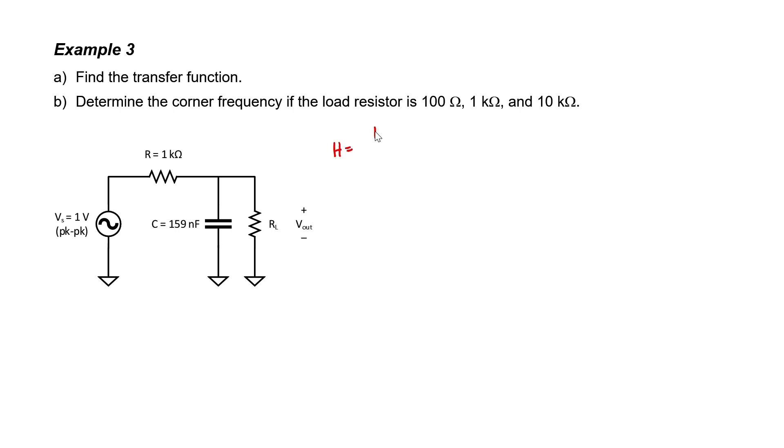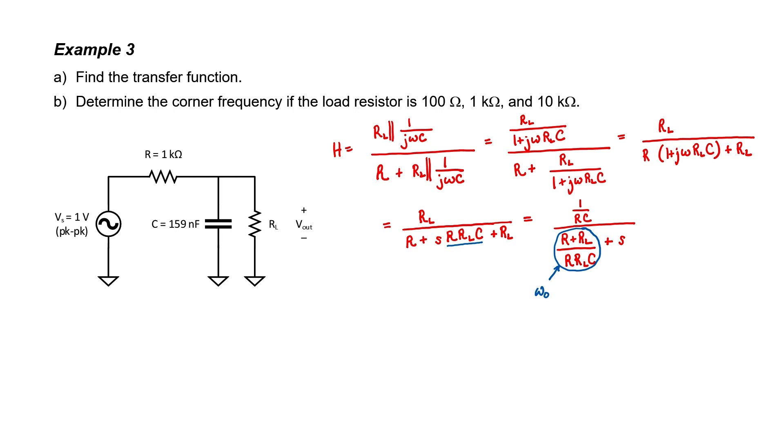Let's find it. We can use voltage division. We have our load resistor in parallel with a capacitor in the numerator and then we have the whole circuit in the denominator. Let's expand out these circuit elements in parallel and then multiply everything through by 1 plus j omega RLC. Let's now substitute s equals j omega and try to isolate the pole in the denominator. To do that, I'm going to divide everything in this fraction by R RLC.